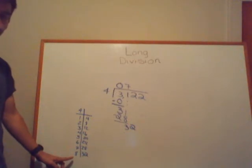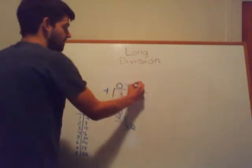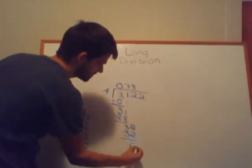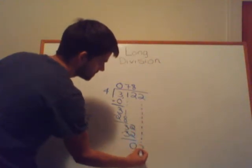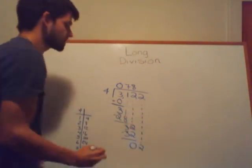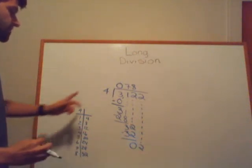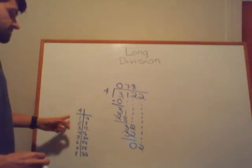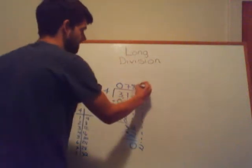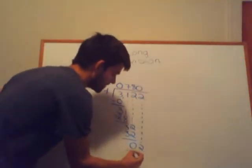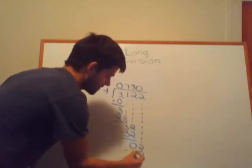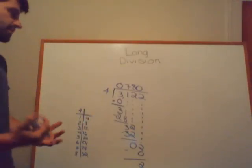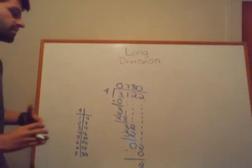From our multiplication tables, 4×8=32, and it goes in evenly. Subtract and bring down the 2. Now we're running into the same problem as the very beginning: 4 can't go into 2 because 4×1=4 which is greater than 2. So 4×0=0, and 2 minus 0 is 2. Now we have a remainder, and we're still trying to figure out how many times 4 goes into 3,122.